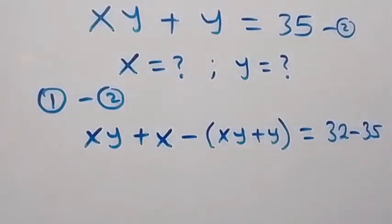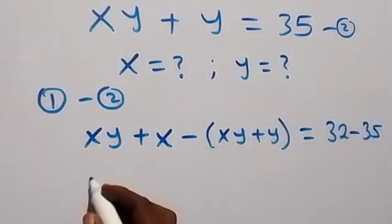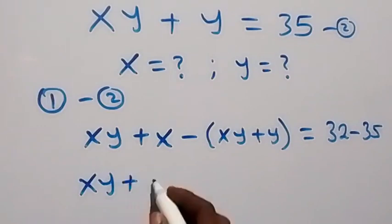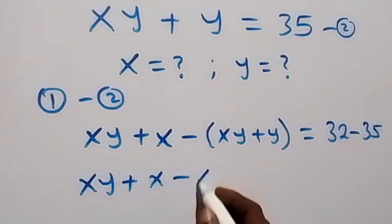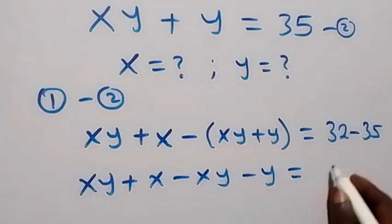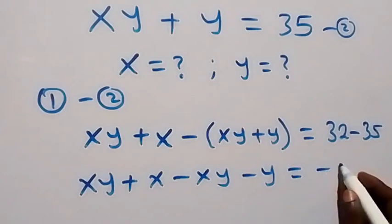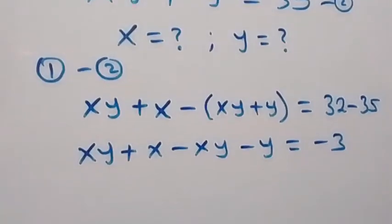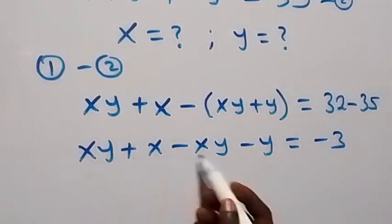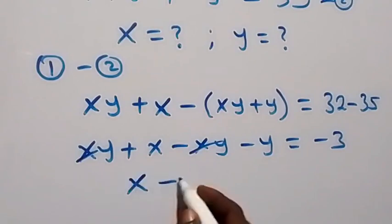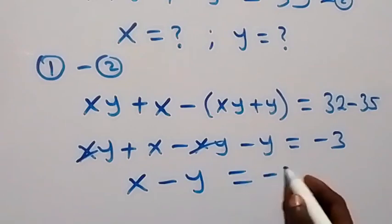When we solve from here, minus open bracket here, this gives us xy plus x, minus xy minus y, equals to minus 3. xy minus xy cancel out.